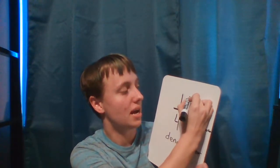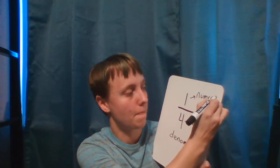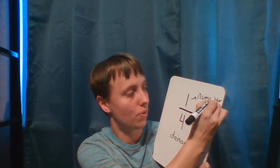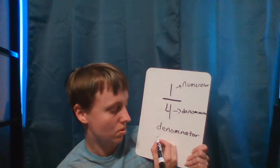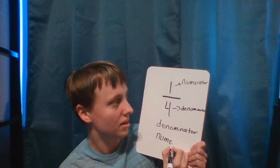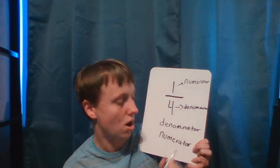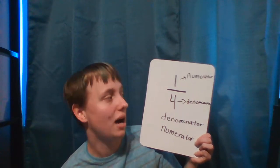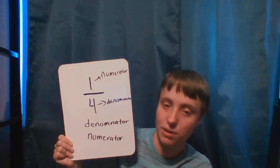Up here, you guys, we have our numerator — spelled N-U-M-E-R-A-T-O-R. Your numerator tells you how many parts of the whole that we have. In this case, we have one out of four parts.